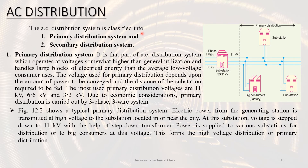For AC distribution, the system is classified into primary distribution and secondary distribution. In primary distribution, the voltage is higher — for example, a substation of 33 kV to 11 kV steps down to 11 kV or 6.6 kV for the primary distribution level. Distribution transformers then step down to secondary distribution voltage levels for consumer supply.